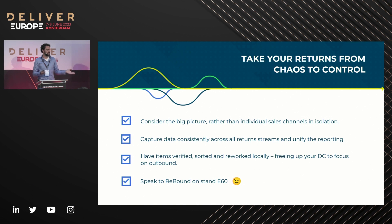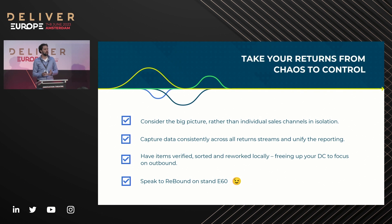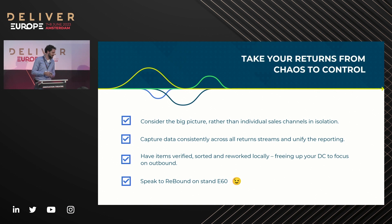We can take a lot of hassle away — on the carrier side, the management side, the track-and-trace side, and also in our hubs. Making sure whatever product comes back to your distribution centers, which are organized to fulfill, we can make sure it's all optimized when we deliver. If you feel like this was interesting, please come see us at Stand E60. We love to talk about returns and we're here all day. I'd like to end it here and answer any questions if you have them.